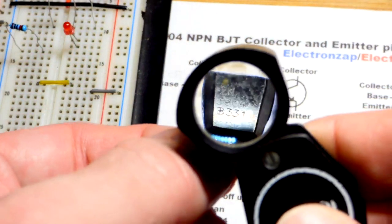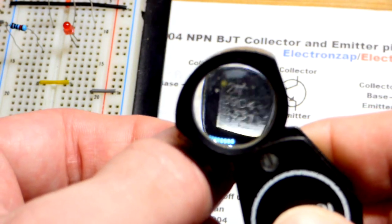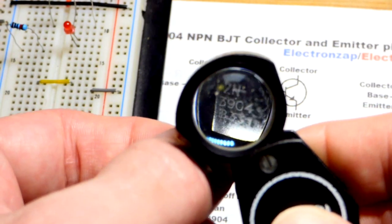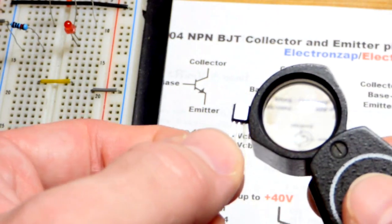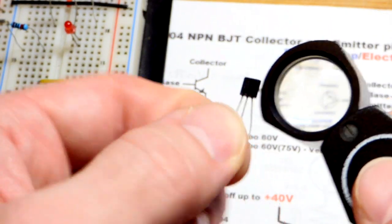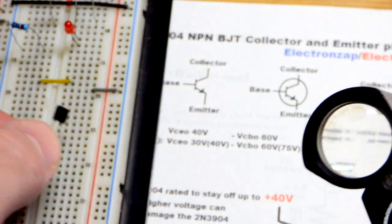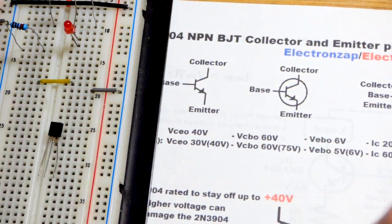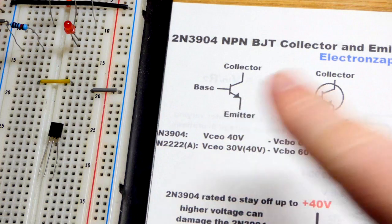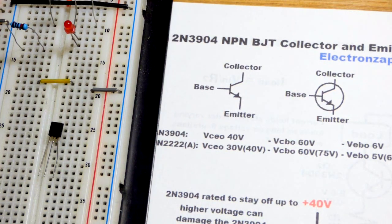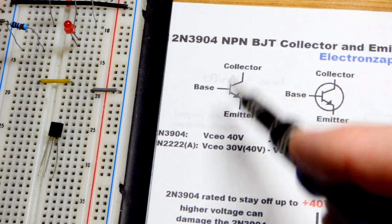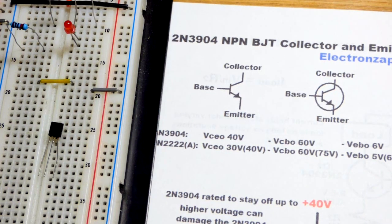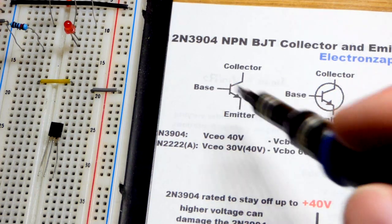This is a 2N3904. There's a lot of NPN bipolar junction transistors, and a lot of them are in this TO92 package that looks like this. But in any case, if it's an NPN bipolar junction transistor, it has this schematic symbol. So this is universal. It may be circled, though, or it may not be circled.